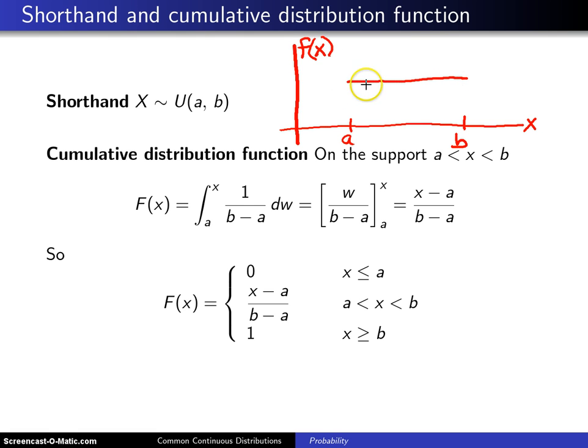It will have a constant probability density function, and in this case with height 1 over b minus a, between the values of a and b. That's what this little squiggle means. It means is distributed as.